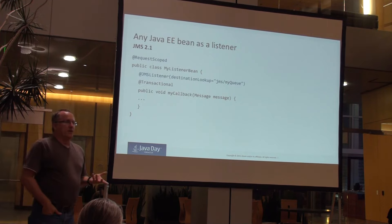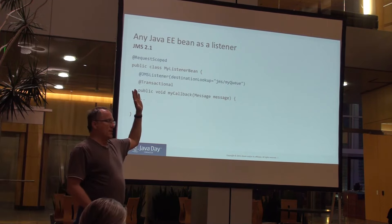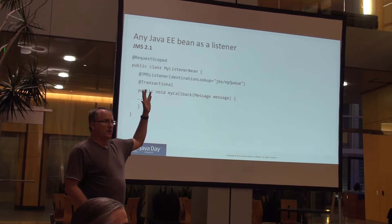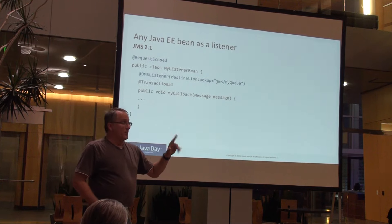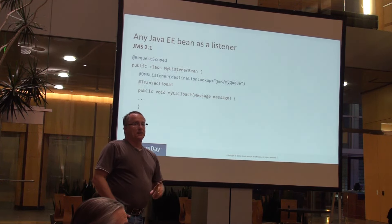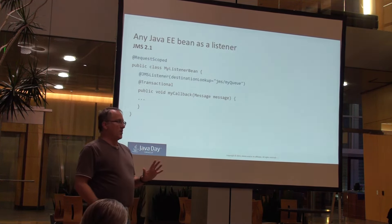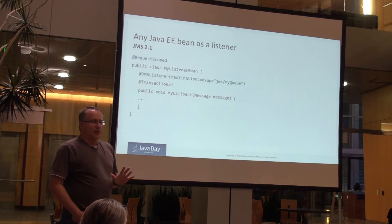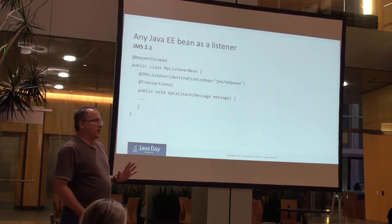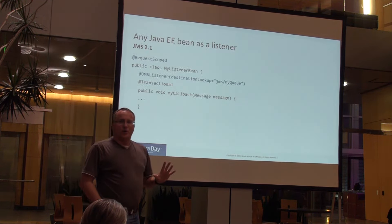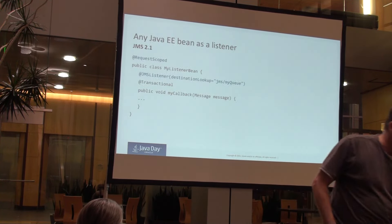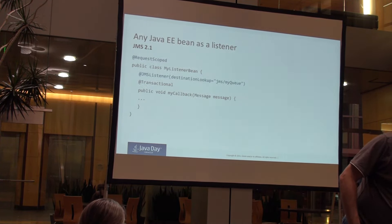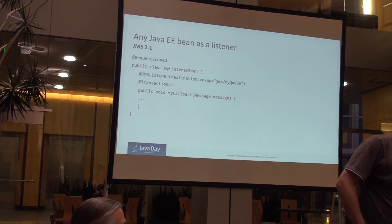In Java EE 7, the JMS API has gotten a lot easier — the number of lines of code to send a message or put a message on a queue is just a couple lines, whereas in the past it was a ton of boilerplate. A lot of work has been done in JMS 2, and this is another area to simplify the API.